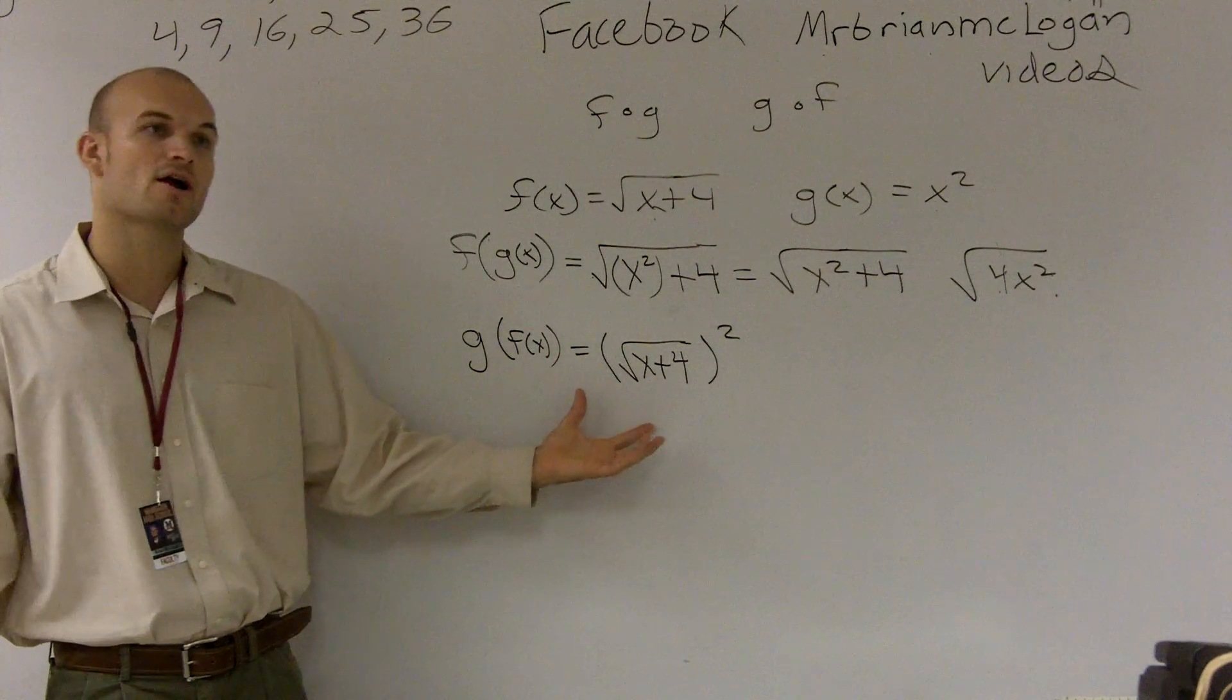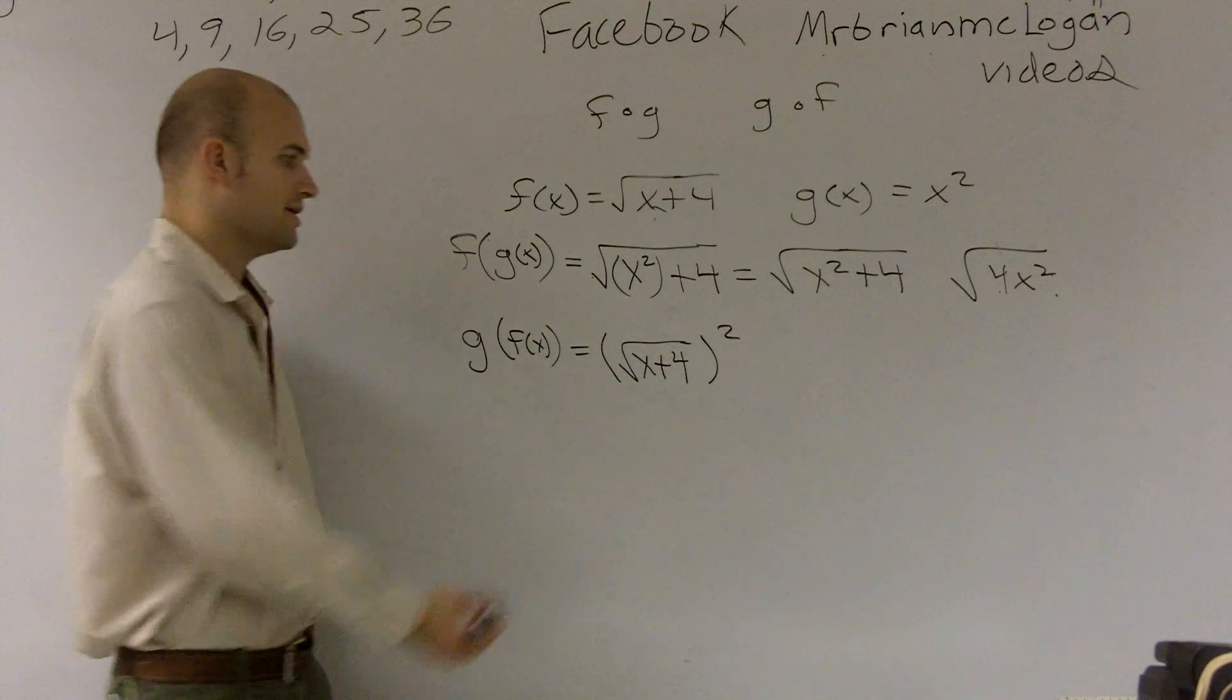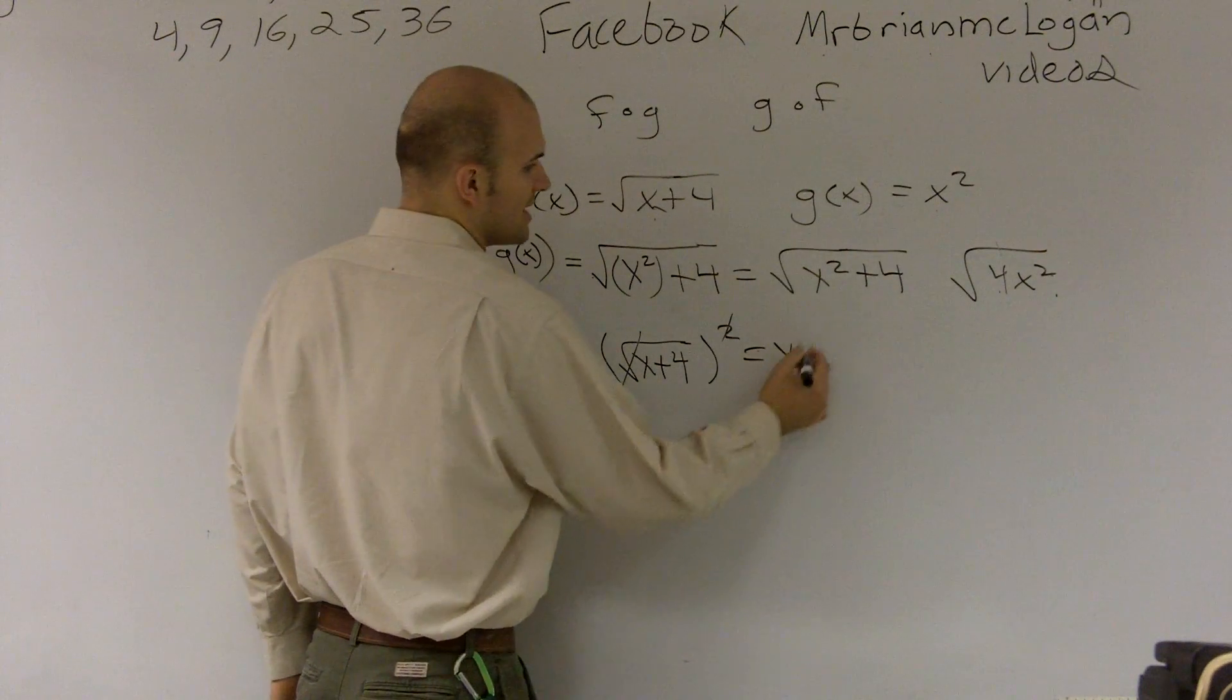However, in this case, we are able to simplify it, because now we're taking the square of a square root. So here, these actually cancel out, and what I'm left with is x plus 4.